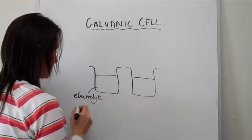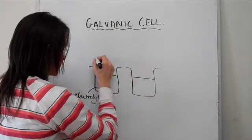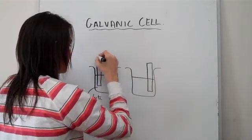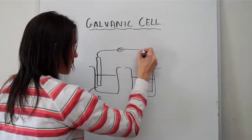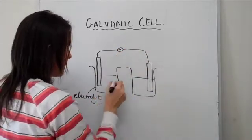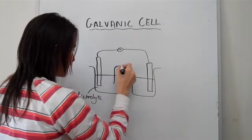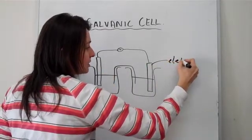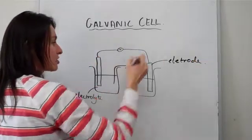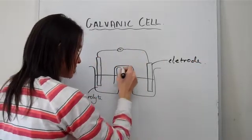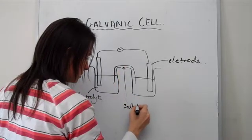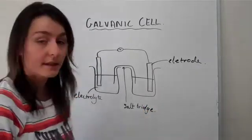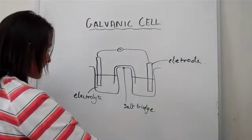We also have electrodes, a voltmeter, and we must have some form of a salt bridge. This here is called an electrode as well as that one. This is the external circuit, this is the salt bridge. That's basically all the components. Let's have a look at how this actually works.